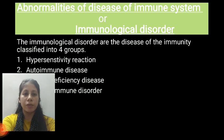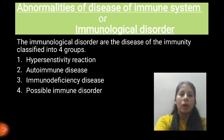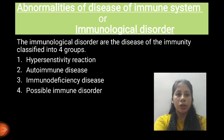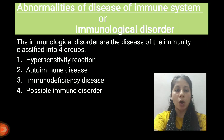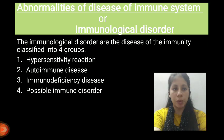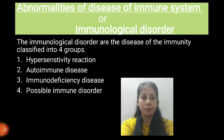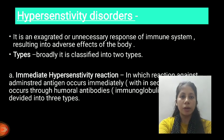In the last lecture, we already described that there are four types of immunological disorder: first is Hypersensitivity Reaction, second is Autoimmune Disease, third is Immunodeficiency Disease, and fourth is Possible Immune Disorder. We already described what is Hypersensitivity Disorder.